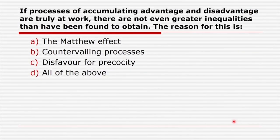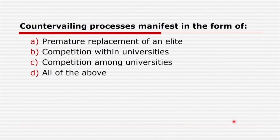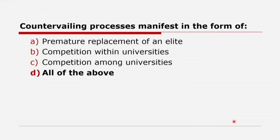If processes of accumulating advantages and disadvantages are truly at work, the reason there are not even greater inequalities is countervailing processes. Countervailing processes manifest in the form of premature replacement of an elite, competition within universities, and competition among universities — all of the above. Countervailing processes manifest in all three forms: premature replacement of the elite and competition both within and among universities.